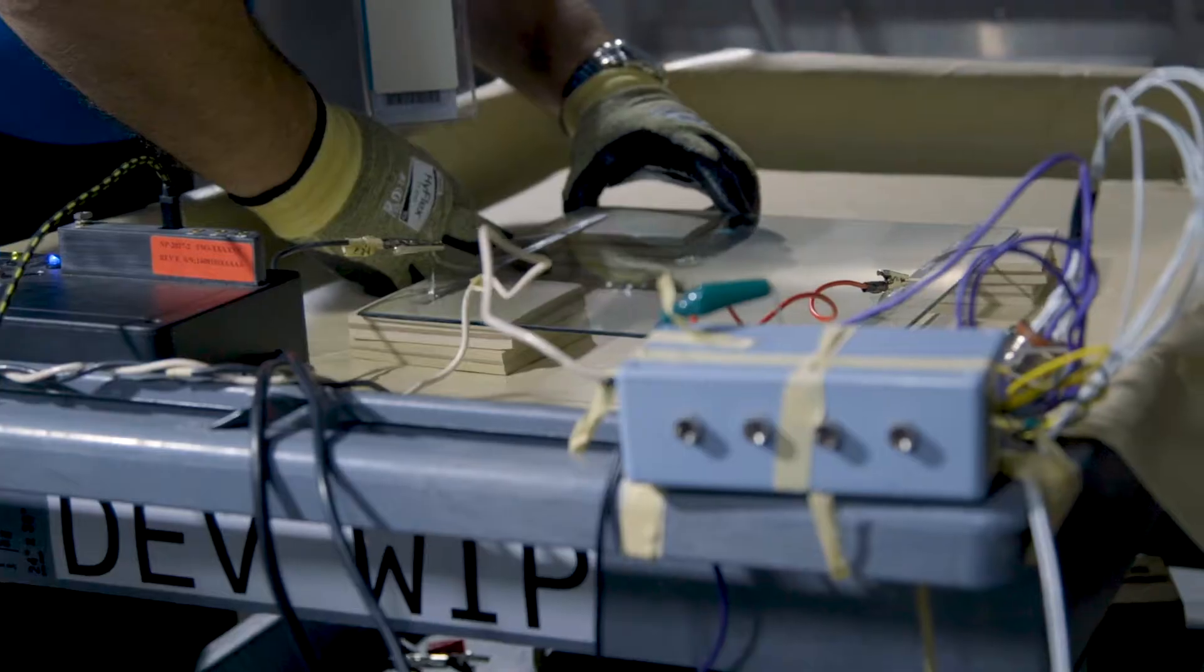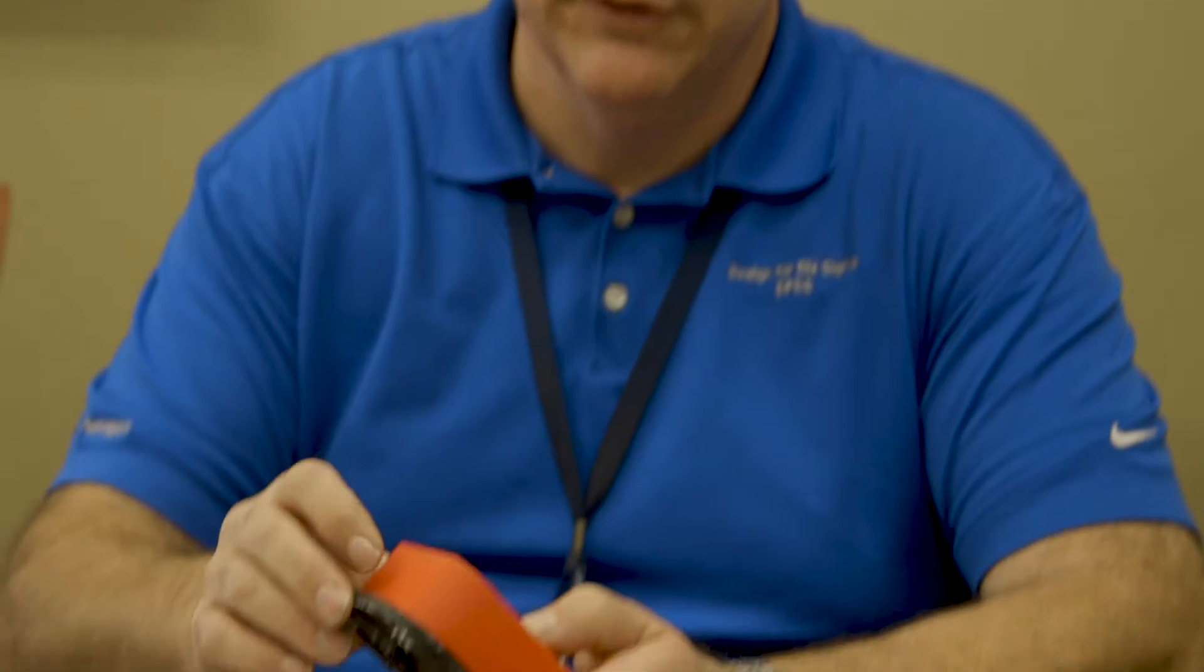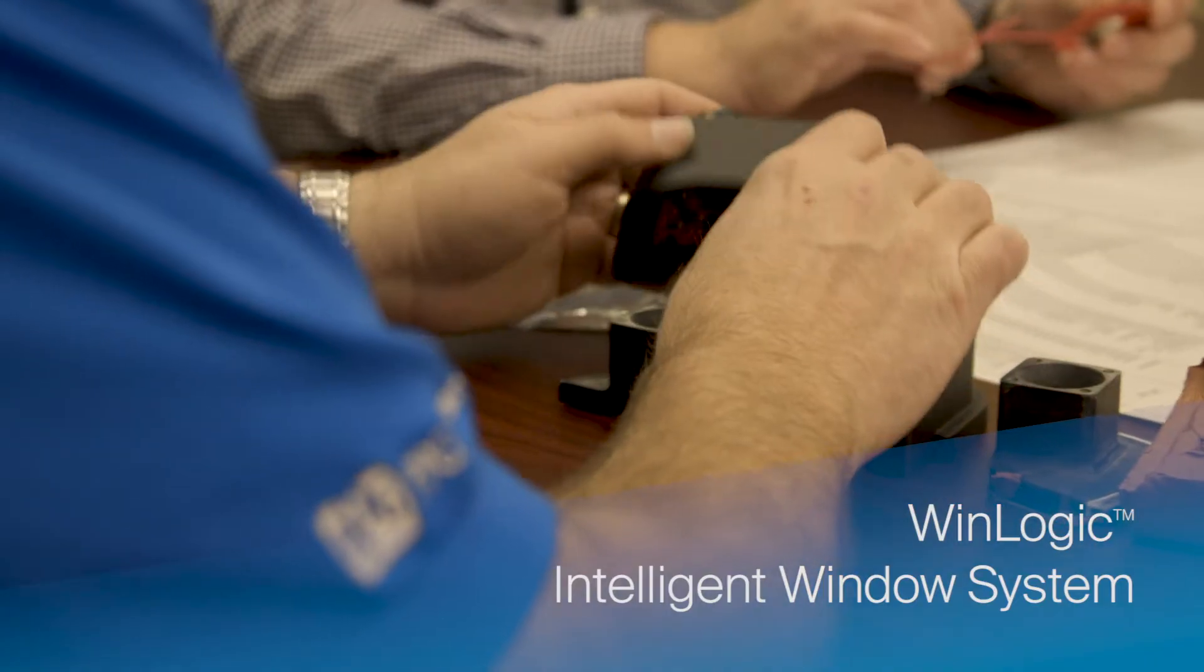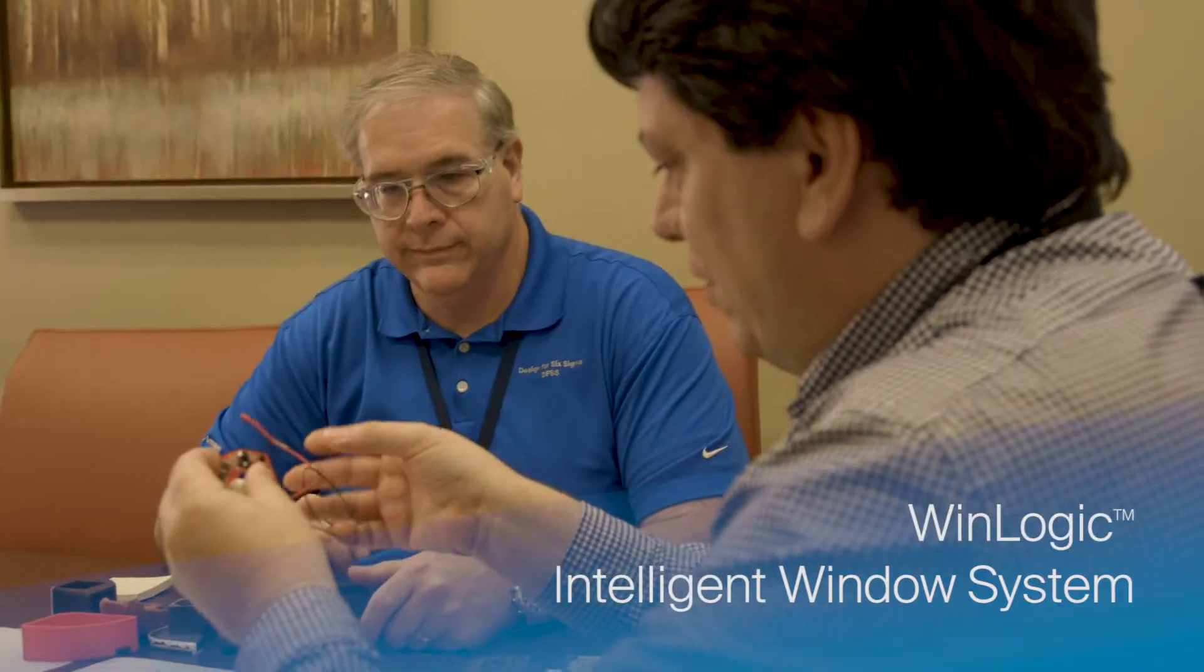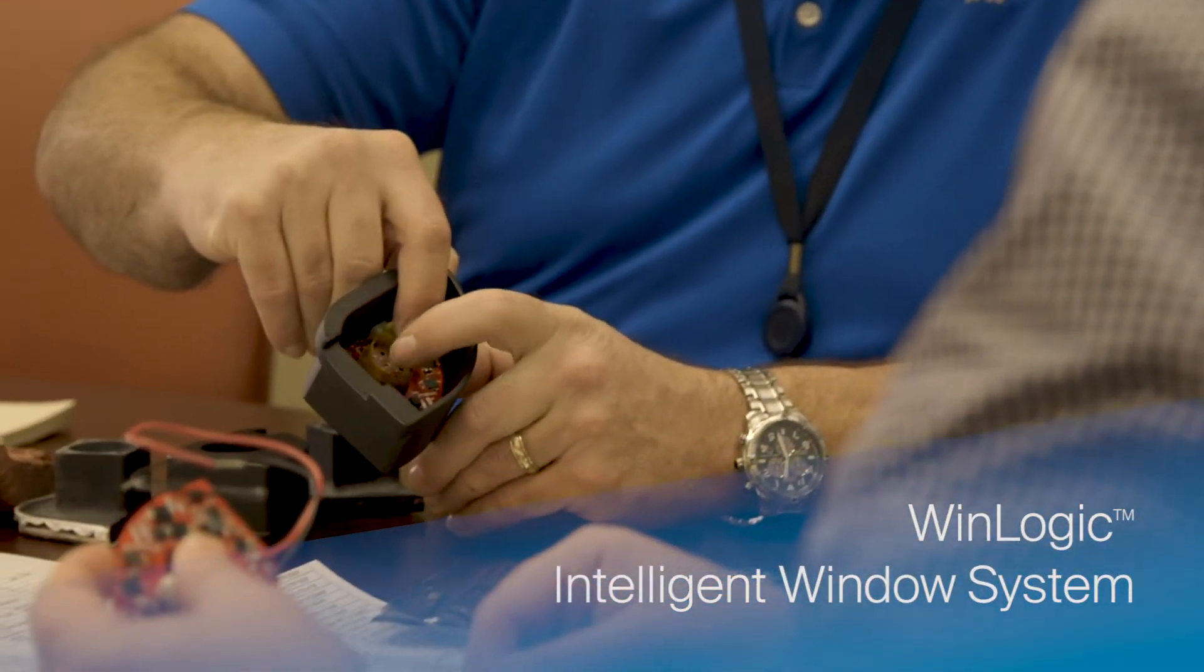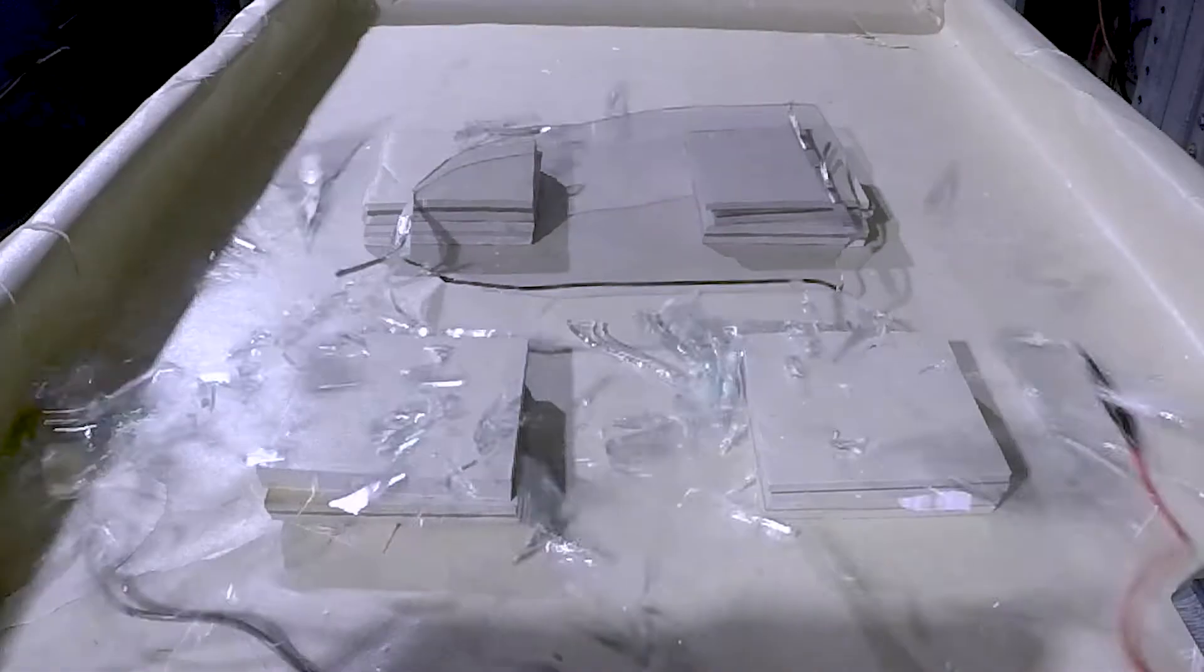What if you could have intelligent sensing technology in your windows to help prevent these problems before they happen? PPG is proud to introduce the WinLogic Intelligent Window System, a circuit integrated into PPG's windshield de-icing and anti-fogging systems that monitors electrical performance and detects heating system problems that could adversely affect windshield performance.